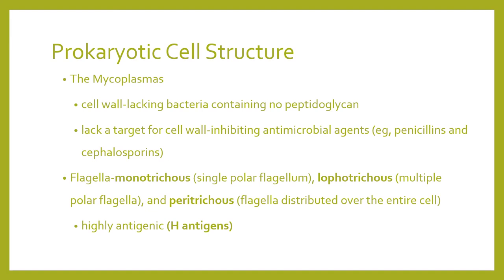We proceed to structures that aid in the motility of prokaryotes — your flagella. According to the number and arrangement of flagella, bacteria can be differentiated as monotrichous — a single polar flagellum — lophotrichous — with multiple polar flagella — and peritrichous — meaning flagella distributed all over the entire cell. Flagella are highly antigenic and contain the H antigen.